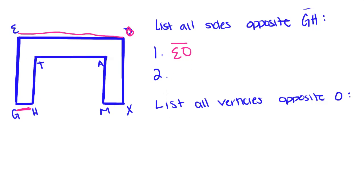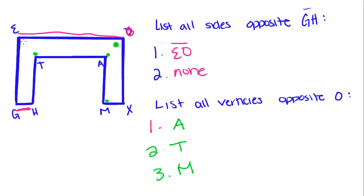So for number two, we'll just write none. List all vertices opposite O: A is opposite O, and T is opposite O, and M. And that's it. So now that we know what the parts of the polygons are, make sure you come back and watch the next lesson, where we talk about different kinds of polygons and what their official names are.